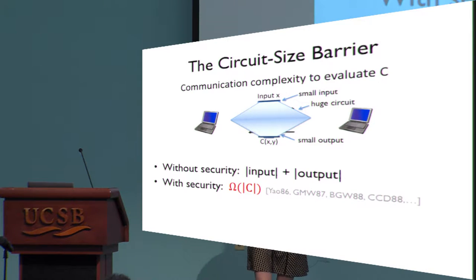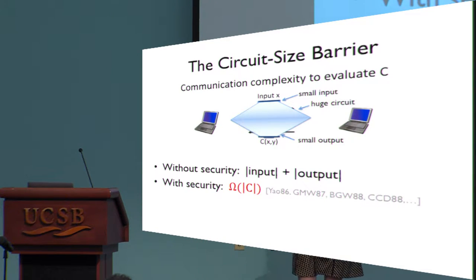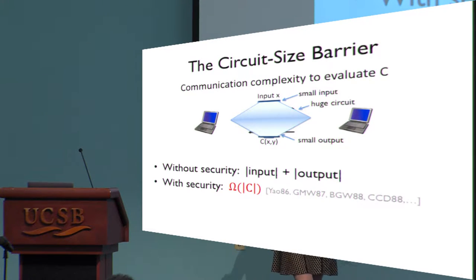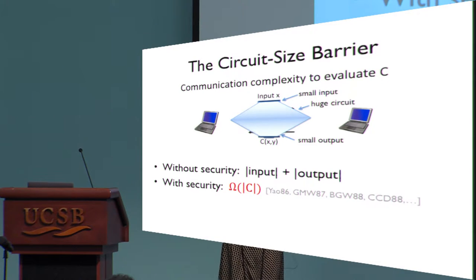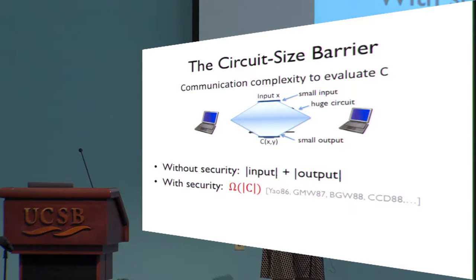Interestingly enough, at this crypto conference, we want to do this securely — and by security I mean that nothing beyond the output is revealed. When we go to this security setting, essentially all known techniques for achieving this require communication that grows with the entire circuit size, as opposed to just the inputs and outputs. There can be a very large gap here, and this is what I mean by the circuit size barrier.